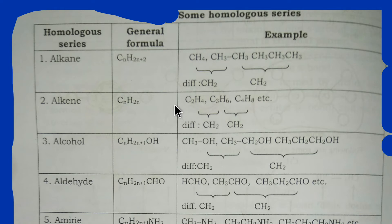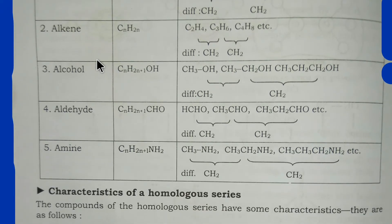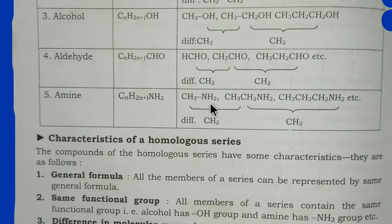For alkenes, taking n=2, 3, and 4 gives consecutive members each differing by CH₂. For alcohols, the general formula is CₙH₂ₙ₊₁OH. For aldehydes, the general formula is CₙH₂ₙ₊₁CHO. For amines, consecutive compounds also differ by only CH₂.